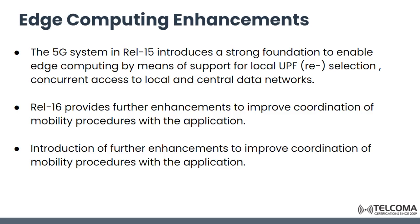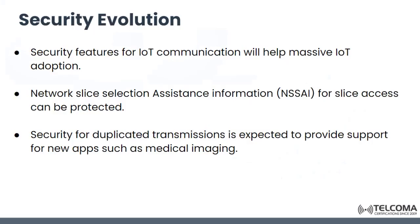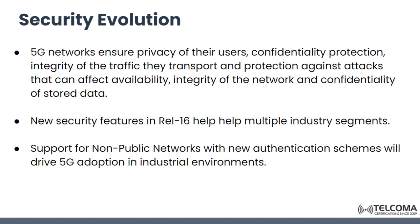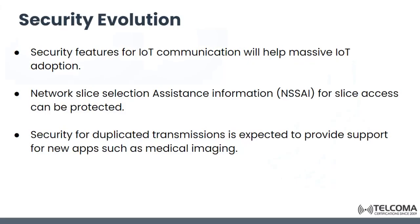Security evolution: 5G networks ensure privacy of their users through confidentiality protection, integrity transport, and protection against attacks, because attacks can affect the availability and integrity of the network and the confidentiality of stored data. New security features will also help industry segments, and support for NPN with new authentication schemes will drive 5G adoption in these environments. Different security features will help massive IoT adoption. Network slice selection assistant information for slice access can be protected, and security for duplicated transmission is expected to provide support for new applications like medical imaging.